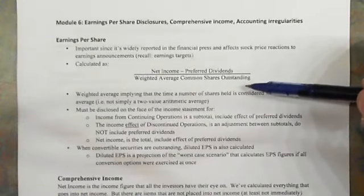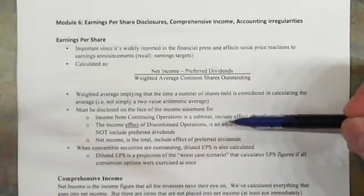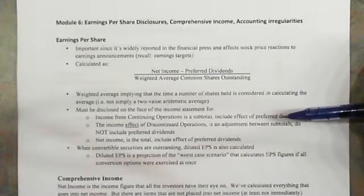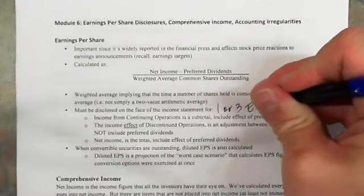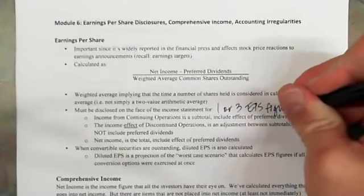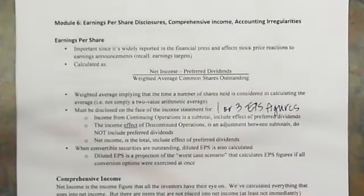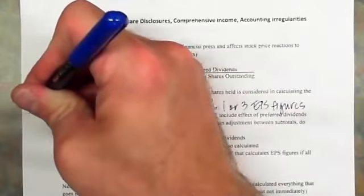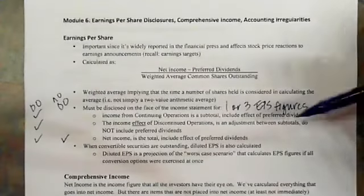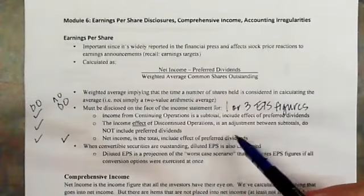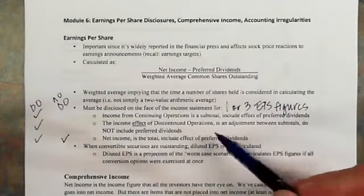I'll just give you the weighted average common shares outstanding for these problems. One thing you will have to consider is that there will either be one or three EPS figures disclosed, and that depends on whether or not there are discontinued operations. If there are discontinued operations, you will have to disclose all three numbers. If there are no discontinued operations, then you will only have net income, because without discontinued operations you can't have income from continuing operations nor an effect of discontinued operations.